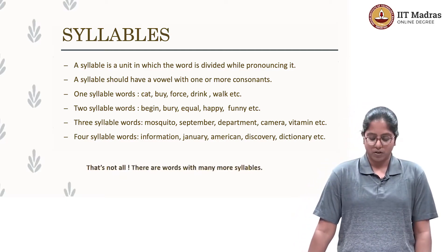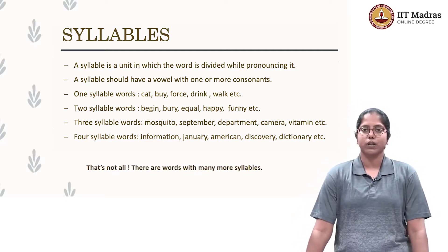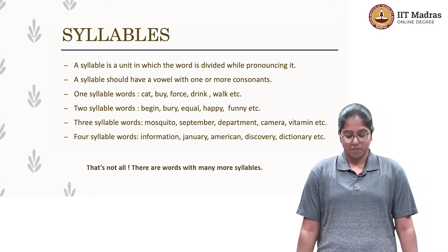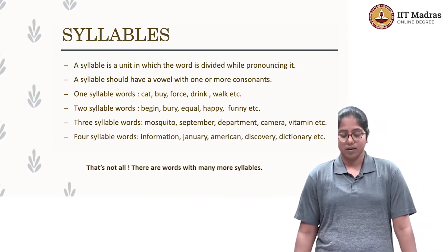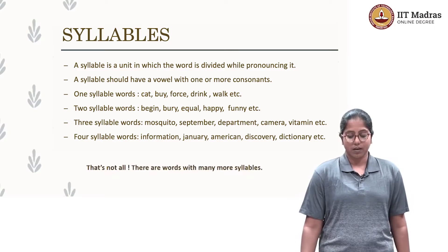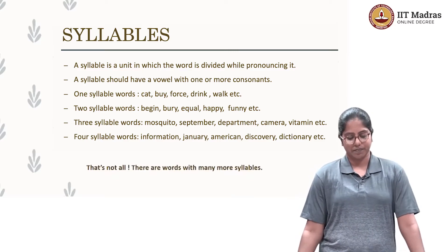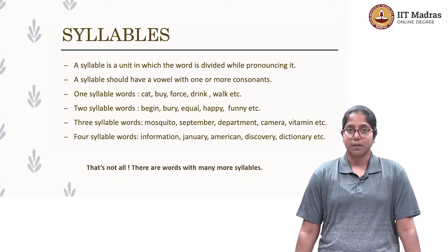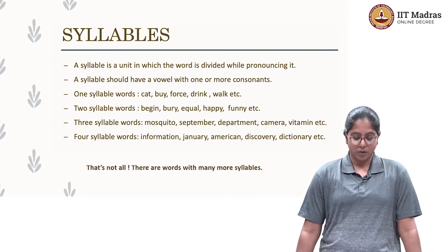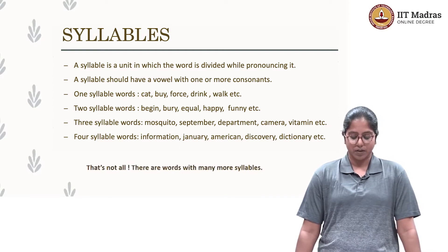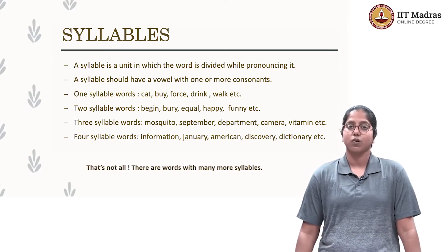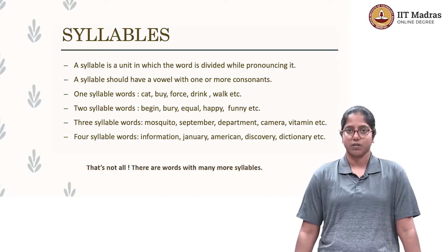Examples of two-syllabled words, or di-syllabic words, are: begin, bury, equal, happy, funny, etc. Examples of three-syllabic words are: mosquito, September, department, camera, vitamin, etc.